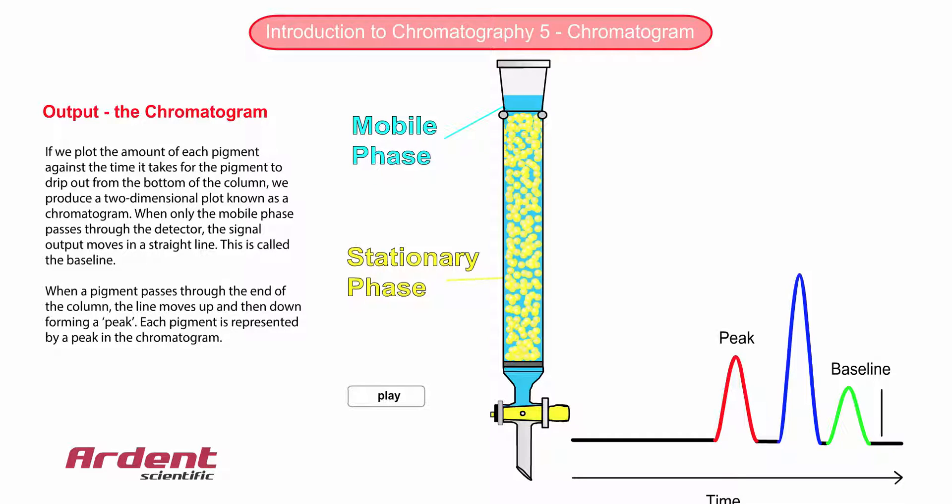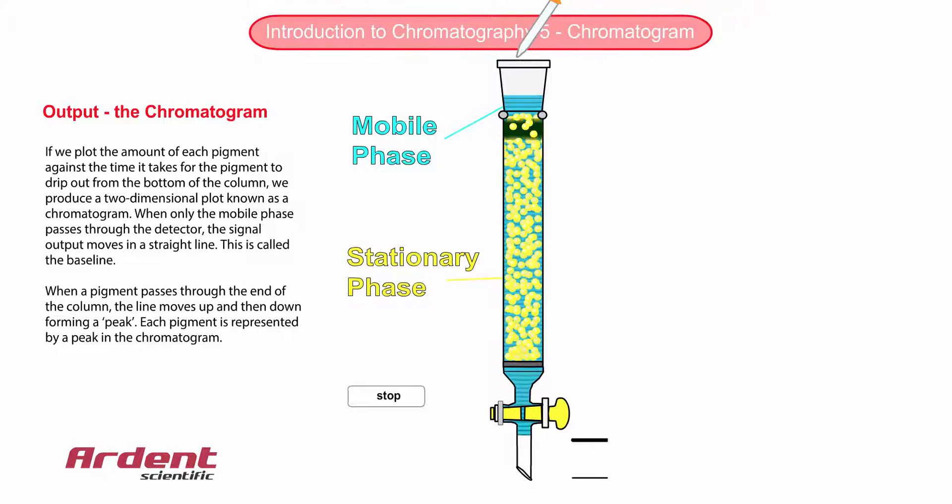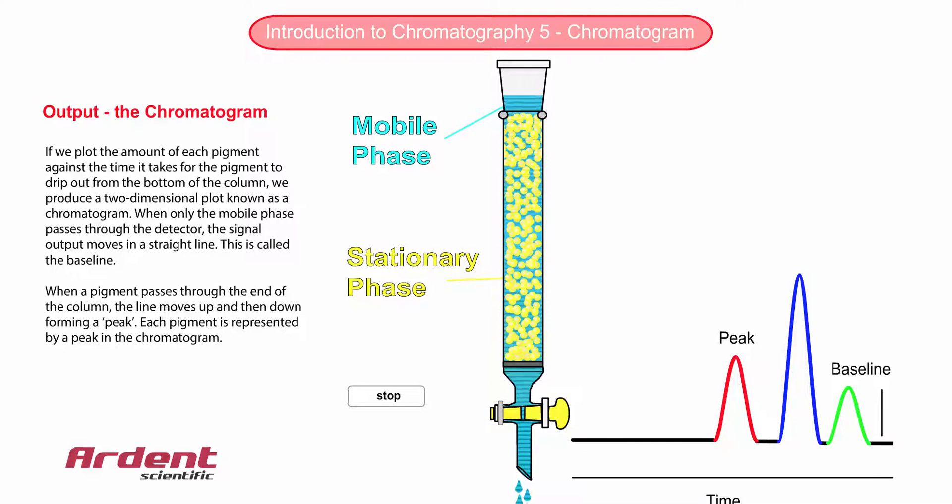You will notice from the chromatogram that the colored pigments are nicely separated from each other. However, if you look closely, you will also notice that there is not even spacing between the peaks. The blue and green components are closer together compared with the red and the blue component. We should talk about this in the next section.